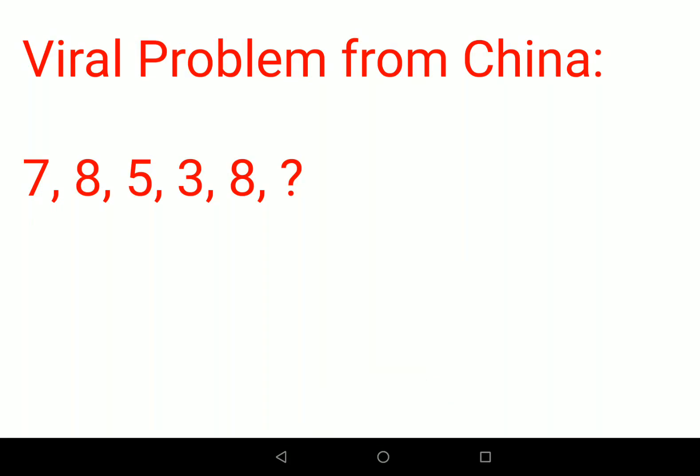Welcome everyone, so this is a viral problem from China. Now why did this problem go viral? If you see the numbers, there's an increment, then a decrement, then again a decrement, and then again an increment. Normally what we see is that the alternate numbers are incrementing and the other alternate numbers are decrementing, but that's not how it is.